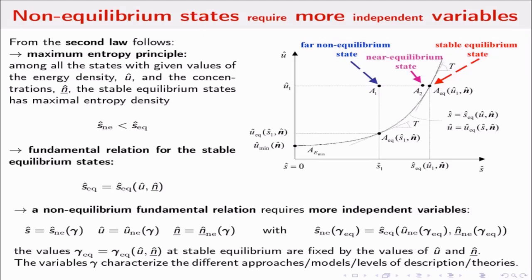When you want to model a system, if you constrain yourself to stable equilibrium states, you have a fundamental relation. If you want to model non-equilibrium states, you need additional variables. The entropy, energy, and concentrations are functions of these variables, I'll call them gamma. Your theory must be compatible with the fact that for given values of the constants of the motion, there must be one and only one equilibrium state.